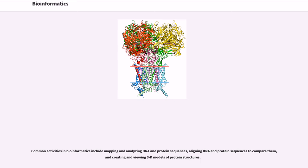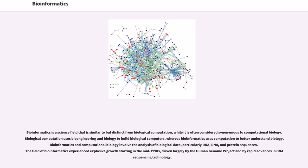Common activities in bioinformatics include mapping and analyzing DNA and protein sequences, aligning DNA and protein sequences to compare them, and creating and viewing 3D models of protein structures. Bioinformatics is a science field that is similar to but distinct from biological computation, while it is often considered synonymous to computational biology. Biological computation uses bioengineering and biology to build biological computers, whereas bioinformatics uses computation to better understand biology. Bioinformatics and computational biology involve the analysis of biological data, particularly DNA, RNA, and protein sequences. The field of bioinformatics experienced explosive growth starting in the mid-1990s, driven largely by the Human Genome Project and by rapid advances in DNA sequencing technology.